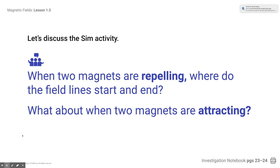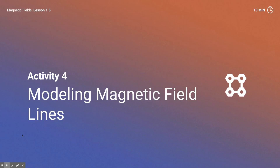When the two magnets are repelling, notice where the field lines start and end. Then what about when the two magnets are attracting? Take a look at what happens with those field lines — specifically where they start and end when the magnets are repelling versus attracting — and use the analyze feature to answer those questions.